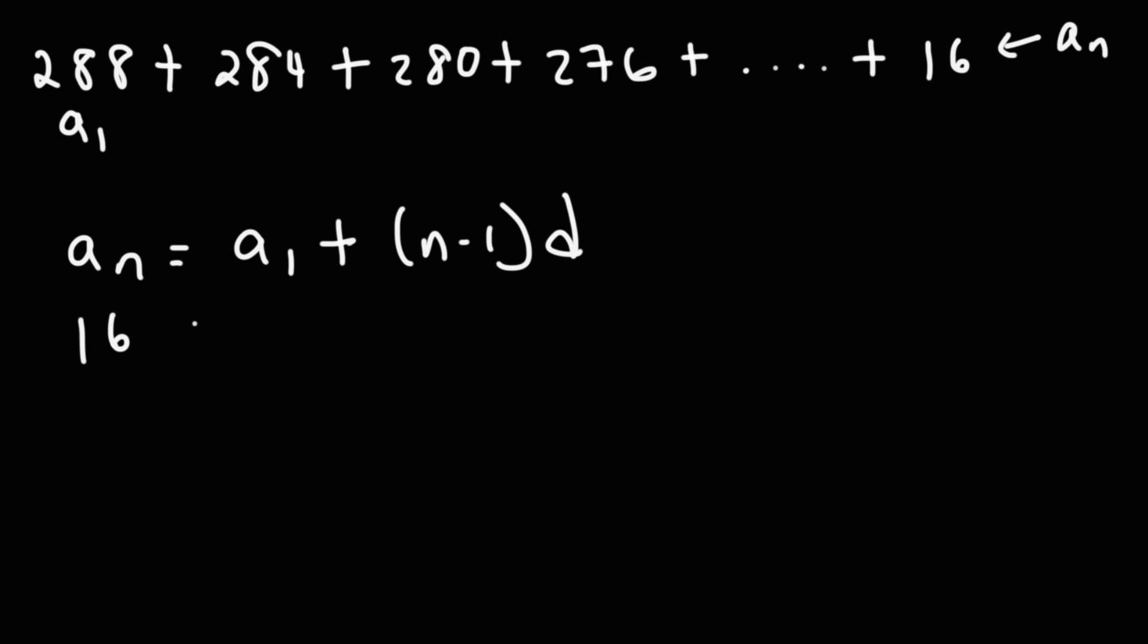A sub n is 16. A sub 1 is 288. And d, the common difference, as we go from the first to the second term, we need to add negative 4. And going from the second to the third term, we need to add negative 4. So the common difference is not positive 4, but negative 4.